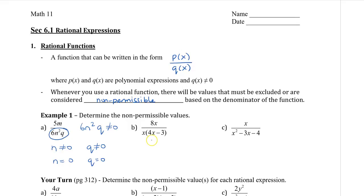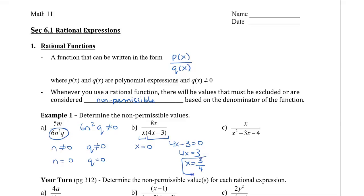In the second expression, we have two factors in the denominator: x and 4x minus 3. We set each factor equal to 0, giving x equals 0 and 4x minus 3 equals 0. Solving the second equation: 4x equals 3, so x equals three-fourths. So we get two non-permissible values.